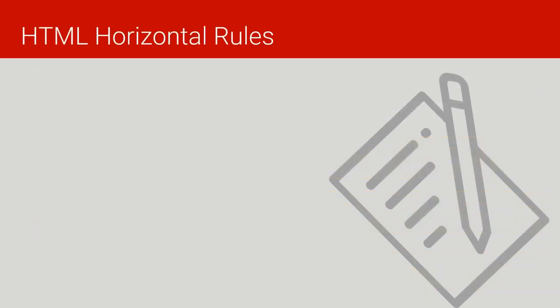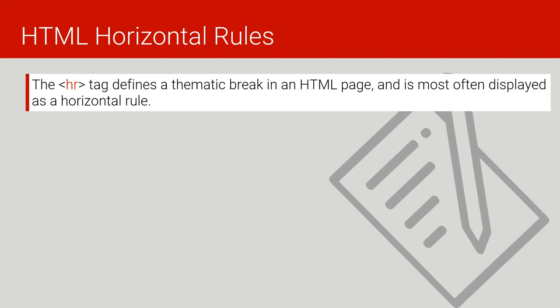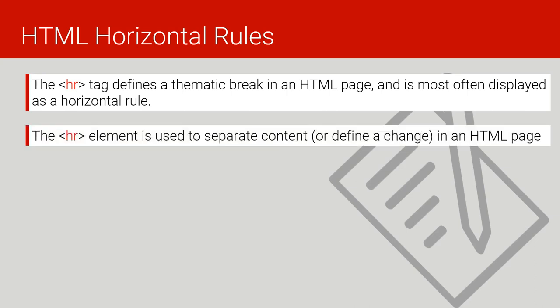We come to the horizontal rule. We abbreviate it as the hr tag. It defines a thematic break in an HTML page and is most often displayed as a horizontal line. The horizontal rule element is used to separate content or define a boundary between different sections in an HTML page.